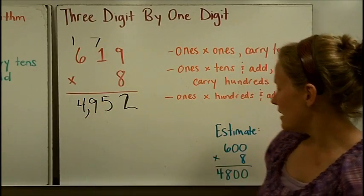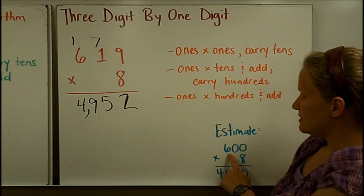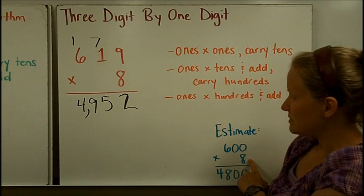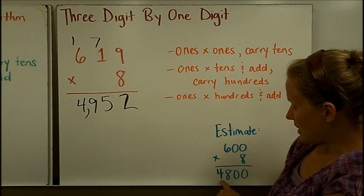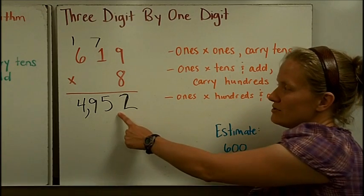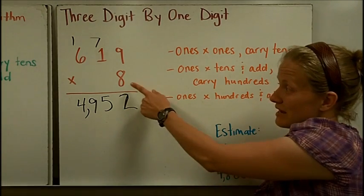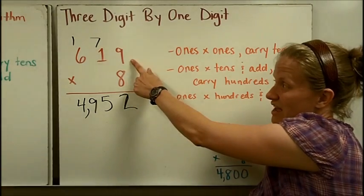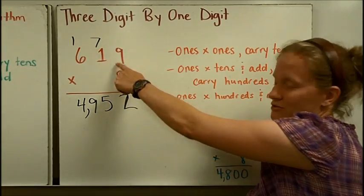When I estimated, I rounded down to 600, and I kept 8 here, and I got 4,800, which is very close to this number. And it's very close because I kept this one the same, and I wasn't very far off from 600 here.